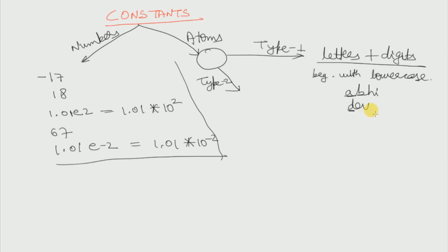If we write 'Dev' with a capital D, that is not an atom — it's a variable, which I'll show after constants. If we use a single quote, we can have any combination of characters. For example, with single quotes 'dev' is an atom. The single quote basically denotes that whatever is written inside is an atom.